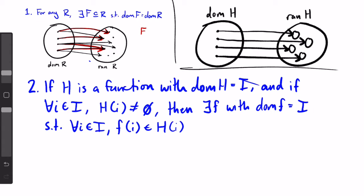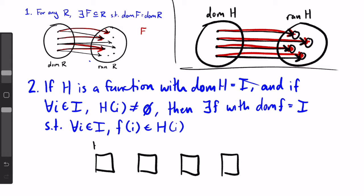For every h, we can then define another function f that takes those same elements and maps each of them to one element in the set that h mapped them to. Personally, I think it's easier to see why form two is the same as the axiom of choice. We take a bunch of sets, all the h(i) and we choose one element from each of these h(i) to be f(i).